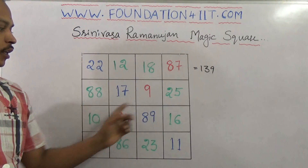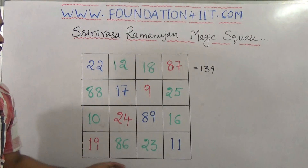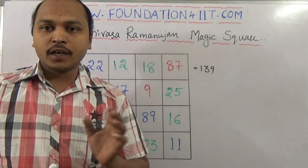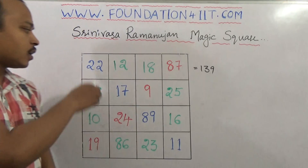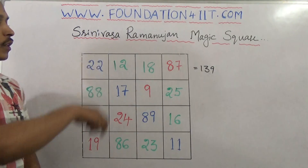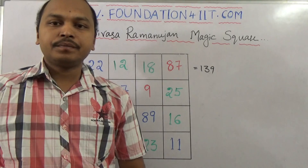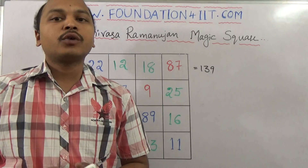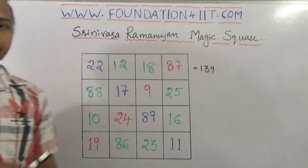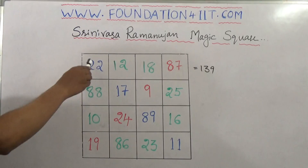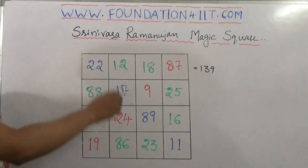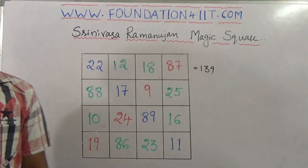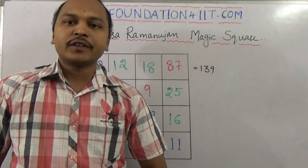First row, second row, third row, fourth row — all rows sum to 139. Again, the sum of the columns: in all the columns also, the total sum is 139. You can check it now — first column, second, third, fourth — also 139.